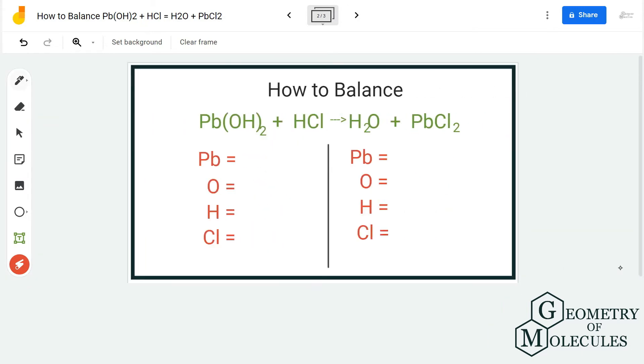To start balancing the equation we are going to first check the number of atoms on both reactant and product side. Starting with reactant side we have one atom of lead or Pb. We have two atoms of oxygen because there is a coefficient here, and then we have two hydrogen atoms plus one hydrogen atom over here. So three hydrogen atoms.